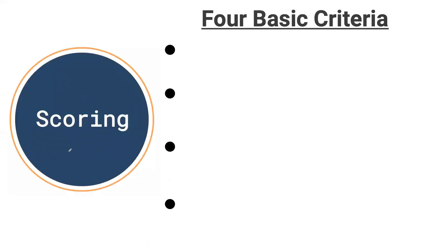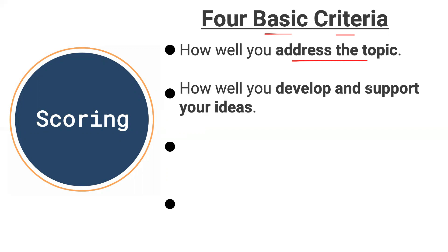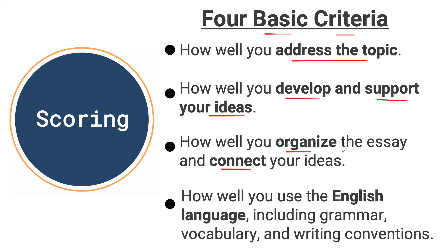For scoring, there are four basic criteria that the examiner will look for when evaluating your essay. The first is how well you address the topic — you have to make sure you are addressing and explaining the topic at hand. Then you want to focus on how well you develop and support your ideas, which comes in the planning stage. You also want to make sure you are organizing the essay and connecting your ideas. And lastly, it will look at how well you use the English language, including grammar, vocabulary, writing conventions, phrasal verbs, and collocations.